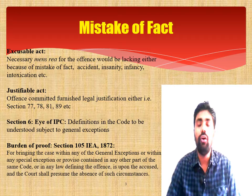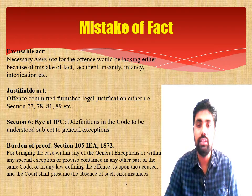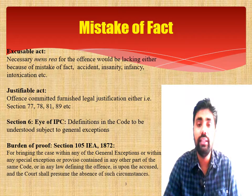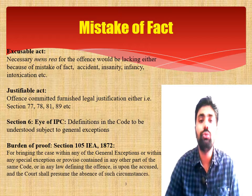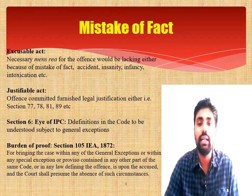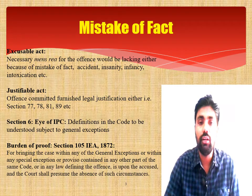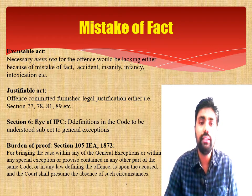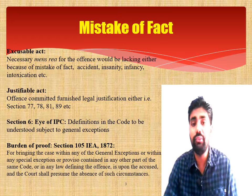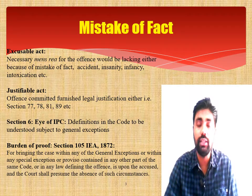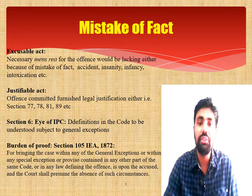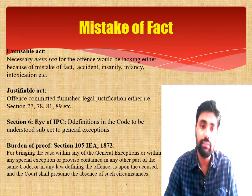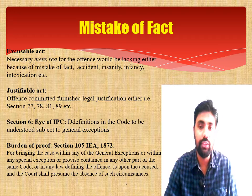In justifiable acts, there is legal justification — it furnishes a ground for the person to be exempted from criminal liability. Legal justification means the person had a very good reason to do a certain act. Here, the necessary mens rea is present, but the person is doing something good for society and thereby claims exemption. Examples include Sections 77, 78, 81, 89, and 94 of the IPC.